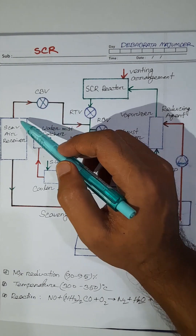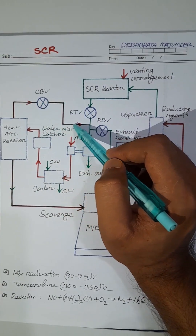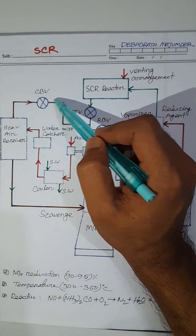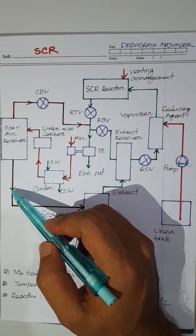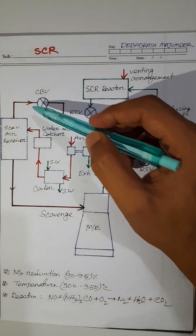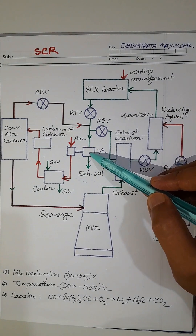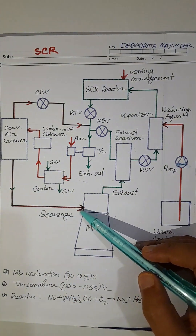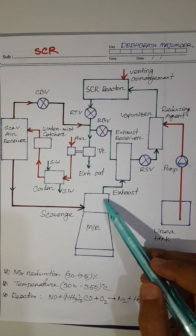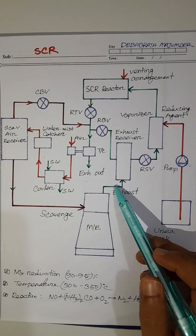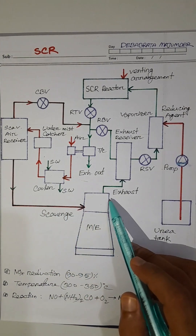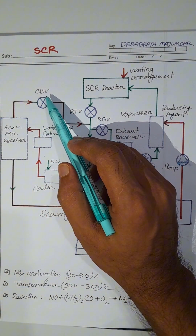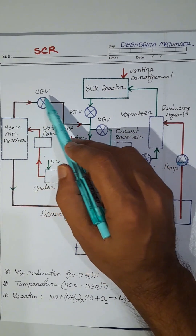When the cylinder bypass valve opens, some scavenger will bypass through this line and go out with the exhaust gas. As some scavenger is bypassed through this line, the scavenger pressure of this line is decreased. As the scavenger pressure decreases, the exhaust temperature of the outlet is increased. So at low load, for increasing the exhaust temperature, the cylinder bypass valve is opened to bypass some scavenger.